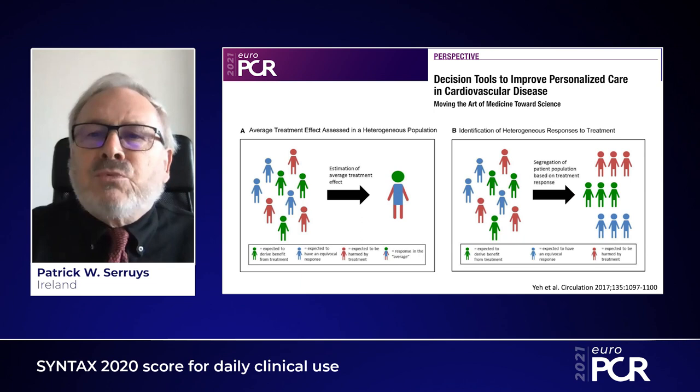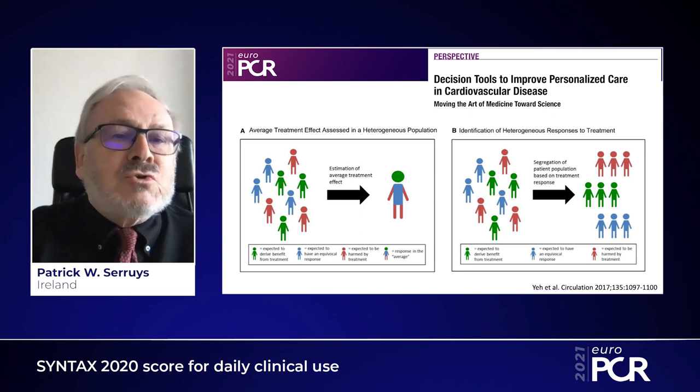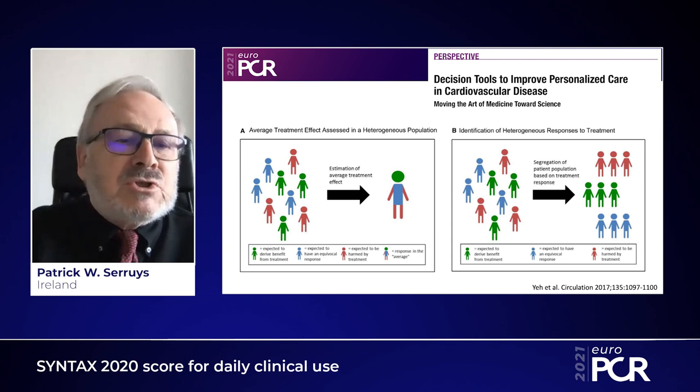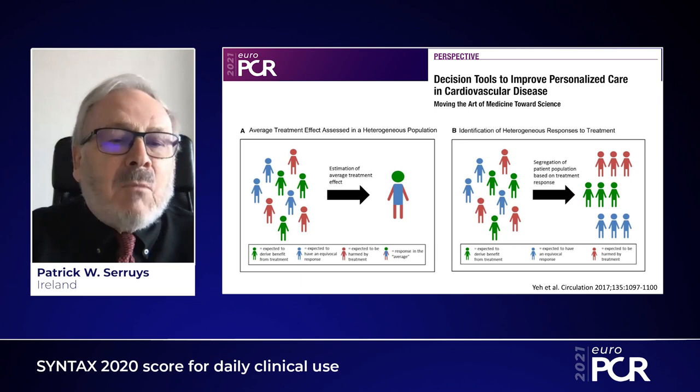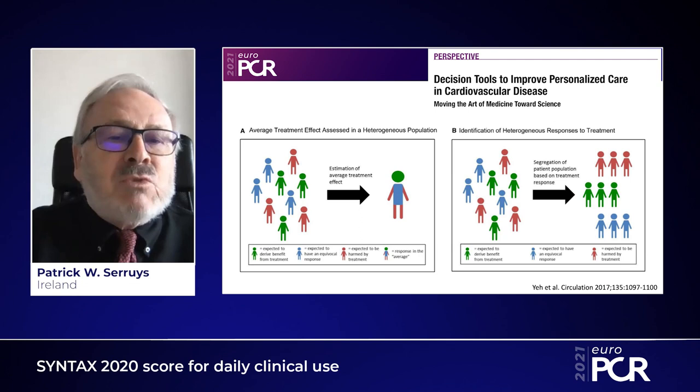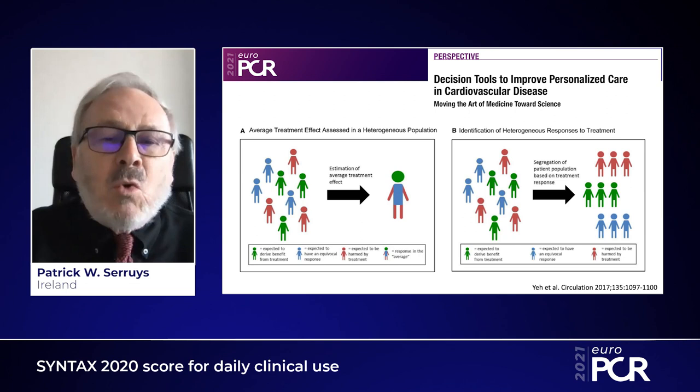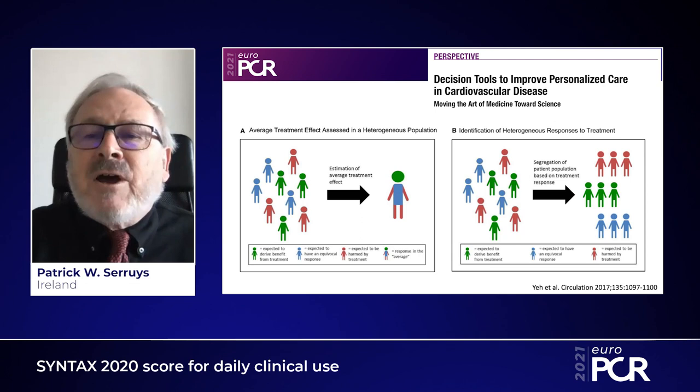Today we are moving and having decision tools to improve personalized care in cardiovascular disease, moving the heart of medicine towards science. On the left-hand side panel, you see the average treatment effect assessed in a heterogeneous population. As you can see, there are small green figures expected to derive benefit from treatment, blue ones expected to have an equivocal response, and red ones expected to be harmed by the treatment — giving an estimation of the average treatment effect shown as a multicolor figure representing the response on average.